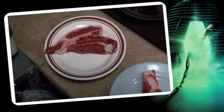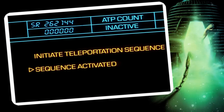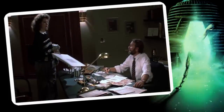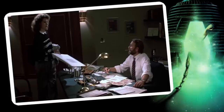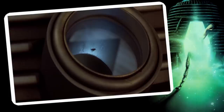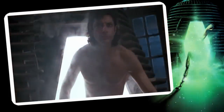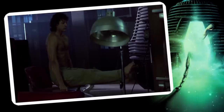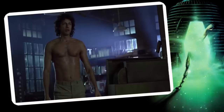Seth y Ronnie comienzan también una relación sentimental. Su primer encuentro romántico inspira a Seth a reprogramar el telepod para comprender la composición del tejido vivo, y teletransporta con éxito un segundo babuino. Ronnie se va antes de que puedan celebrarlo, y Seth teme que ella esté reavivando su relación con su editor, Stathis Borans. En realidad, Ronnie se ha ido para enfrentarle sobre una amenaza velada, estimulada por sus celos a Seth para publicar la historia del telepod sin su consentimiento. Seth decide teletransportarse solo sin darse cuenta de que una mosca doméstica se ha deslizado dentro de la cápsula del transmisor con él. Él emerge de la cápsula receptora aparentemente normal. Seth comienza a exhibir una mayor fuerza, resistencia y potencia sexual, lo que él cree que es el resultado de la teletransportación que purifica su cuerpo.